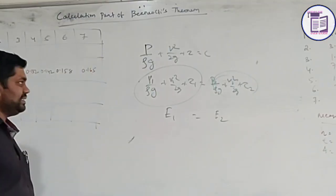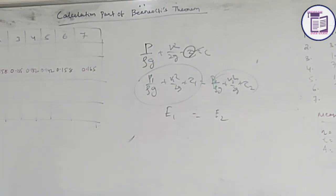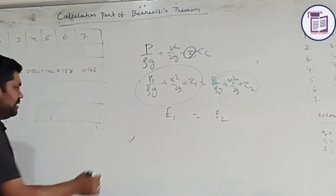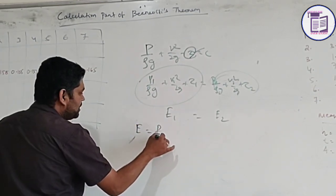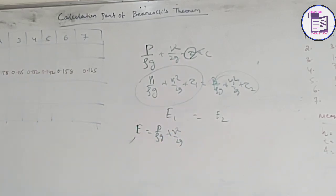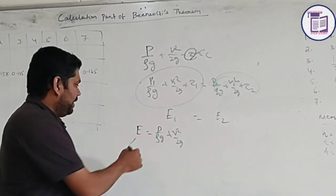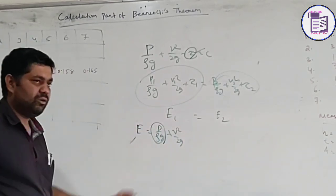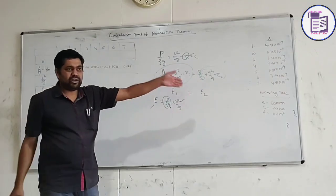Going through this, Z is your datum head, which is constant. So we are keeping Z constant. Only considering the energy level equal to P by rho g plus V squared by 2g — this is your total energy level you have to find. From your experiment you can already find P by rho g, and only you need to find V squared by 2g from the given values.